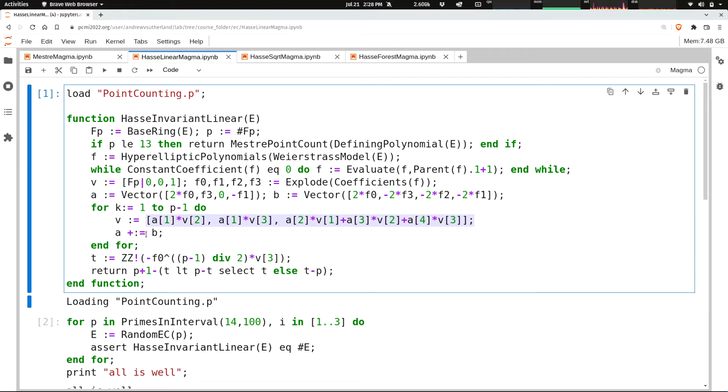And then this a plus colon equals b is applying the finite differences. It's giving me the, it's increasing, it's changing the vector a that's representing our, the entries in our matrix that we're interested in, and it's updating them to go to the next value of k. And then at the very end, once we've computed the final vector, we want the third component of it, and we're supposed to multiply it by f0 raised to the nth power, and n is p minus 1 over 2, that's what this expression is doing here.